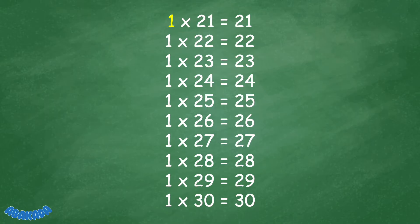1 times 21 equals 21. 1 times 22 equals 22. 1 times 23 equals 23. 1 times 24 equals 24. 1 times 25 equals 25.